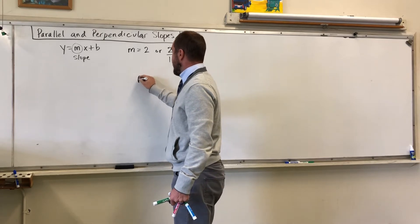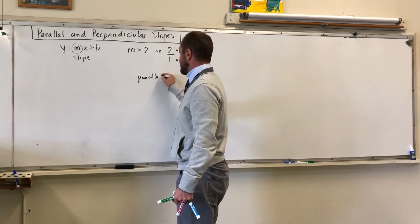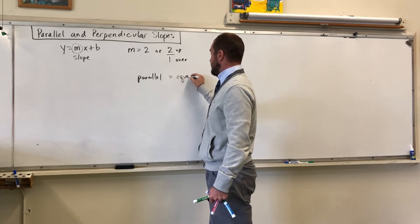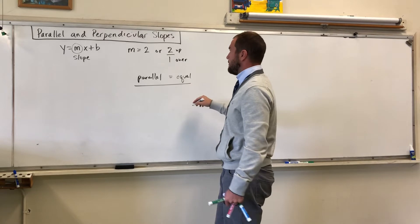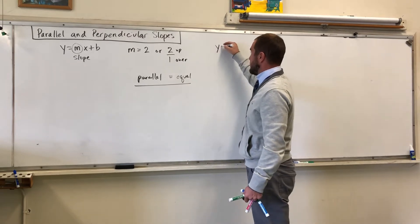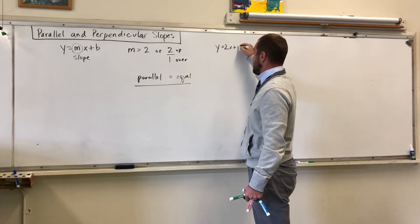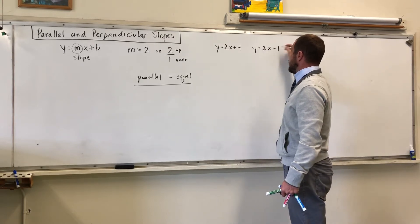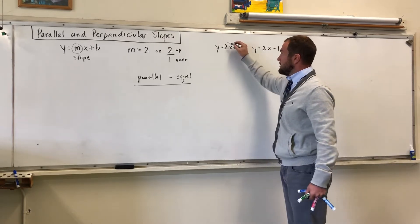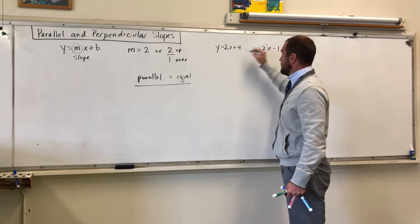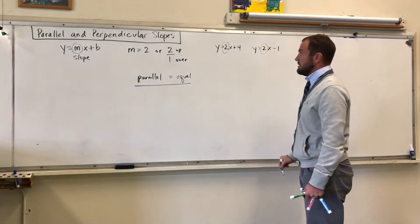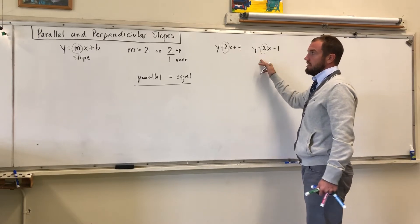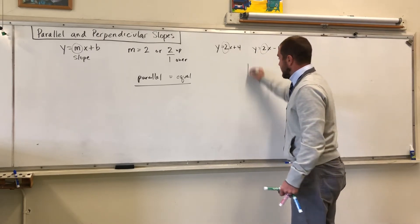If I have a parallel slope, I want that to be equal. I want the slopes to be equal because I want the same up and over. So let's say I'm looking at two separate lines: 2x plus 4 and 2x minus 1. If I'm looking at these two lines and I see that my slopes are the same, I can say these slopes are parallel. Let's take a look at that.